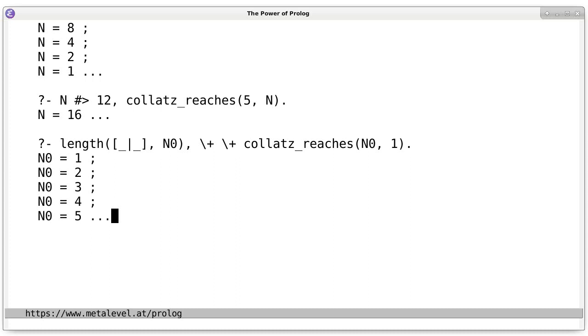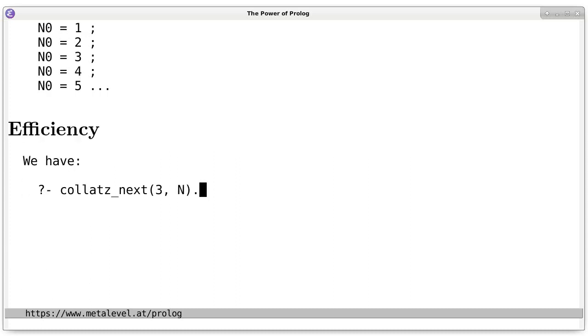As the last point, we have a small note about efficiency. Notice this interaction. collatz_next 3, n yields n is 10 and that's fine. But on the other hand, for a different integer, say 10, collatz_next 10 and n yields n is 5. But then the query leaves a so-called choice point. So, we had to backtrack and only on backtracking does the system say, no, there are no other solutions.